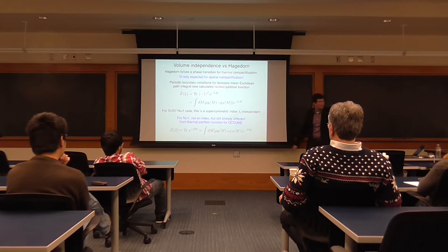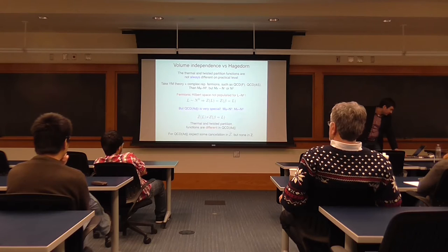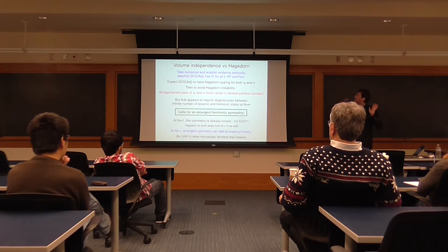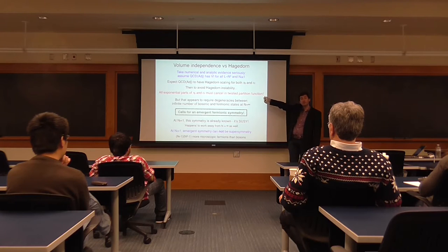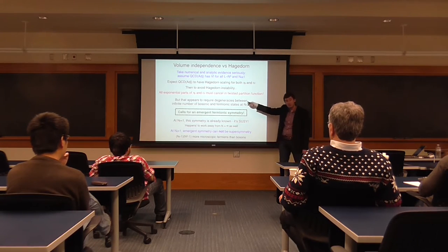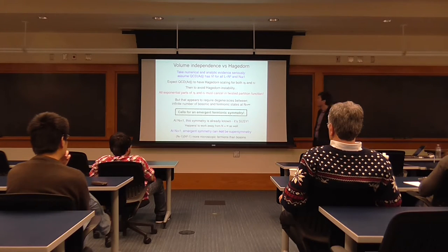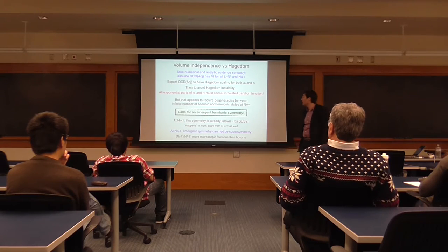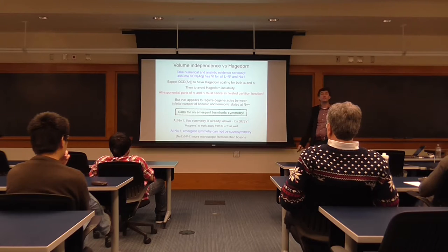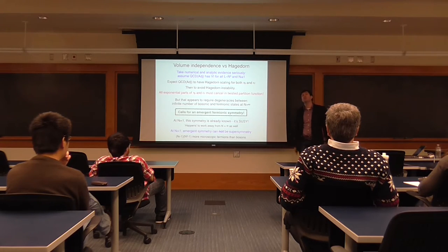Suppose you believe volume independence holds for QCD adjoint, and at the same time suppose you believe there's a Hagedorn spectrum. The Hagedorn growth affects both bosonic and fermionic densities of states. To avoid a deconfinement transition, you have to have cancellation between the exponentially growing parts of the bosonic and fermionic densities of states — you need relationships between the spectrum of bosonic and fermionic states. That requires degeneracies between an infinite number of bosonic and fermionic states at N = ∞. That has to be a symmetry. When N_f = 1, the symmetry is already known — it's just SUSY. But when N_f > 1, it has to be something else, because there are more microscopic fermions than bosons. So it can't be SUSY. That doesn't contradict Coleman-Mandula for the reason I said at the beginning.